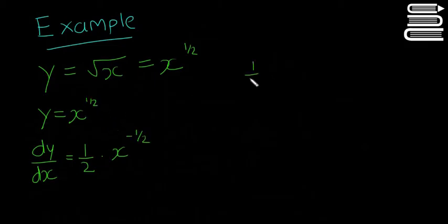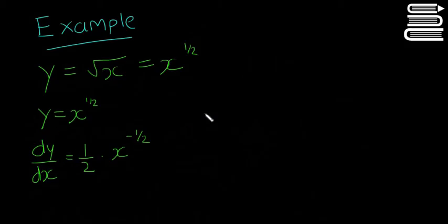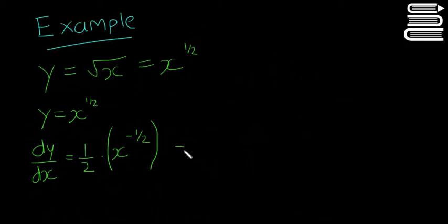The reason it's minus a half is that we're supposed to take one away from the exponent: a half minus one is equal to minus a half. So now we have dy/dx is equal to a half multiplied by x to the power of minus a half. That's going to be equal to a half multiplied by one over x to the power of a half.